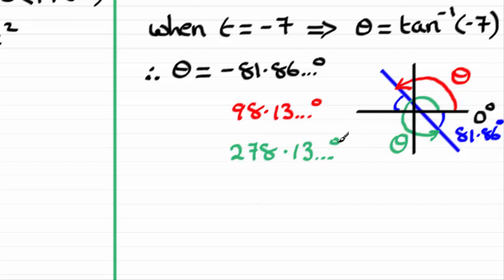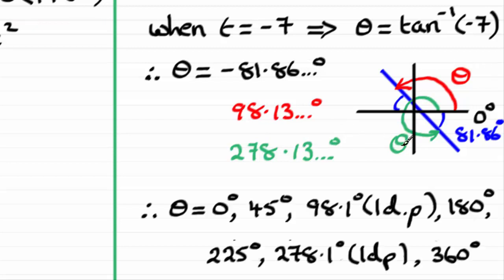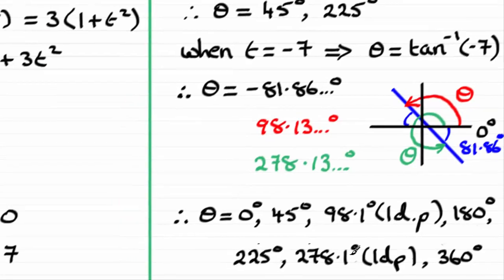So when it comes to summarizing our answers, we've got some that are exact and they are 0, 45 degrees, 180 degrees, 225 degrees and 360 degrees. And the other two, this red one and the green one, I've rounded to one decimal place: 98.1 degrees and 278.1 degrees.